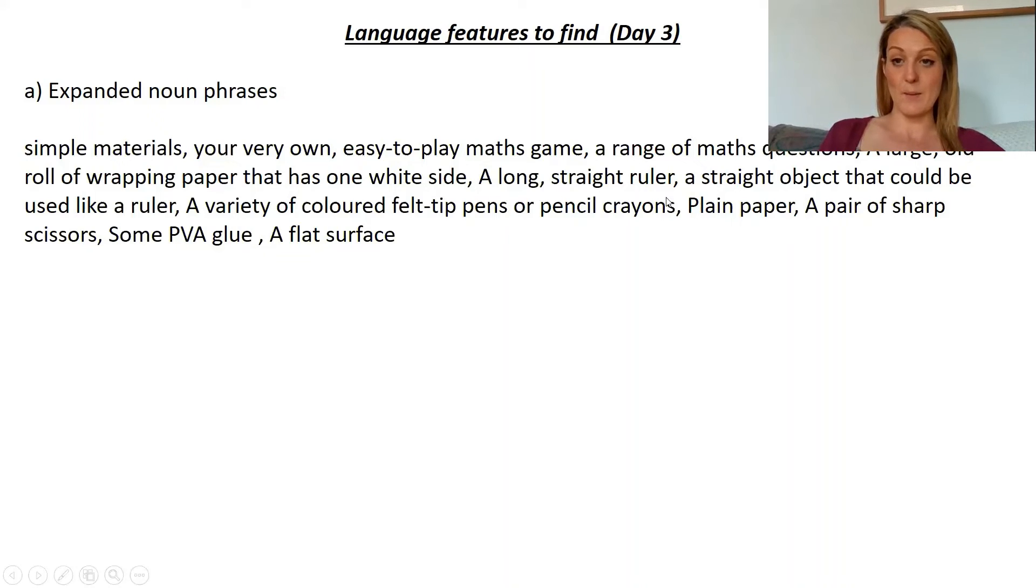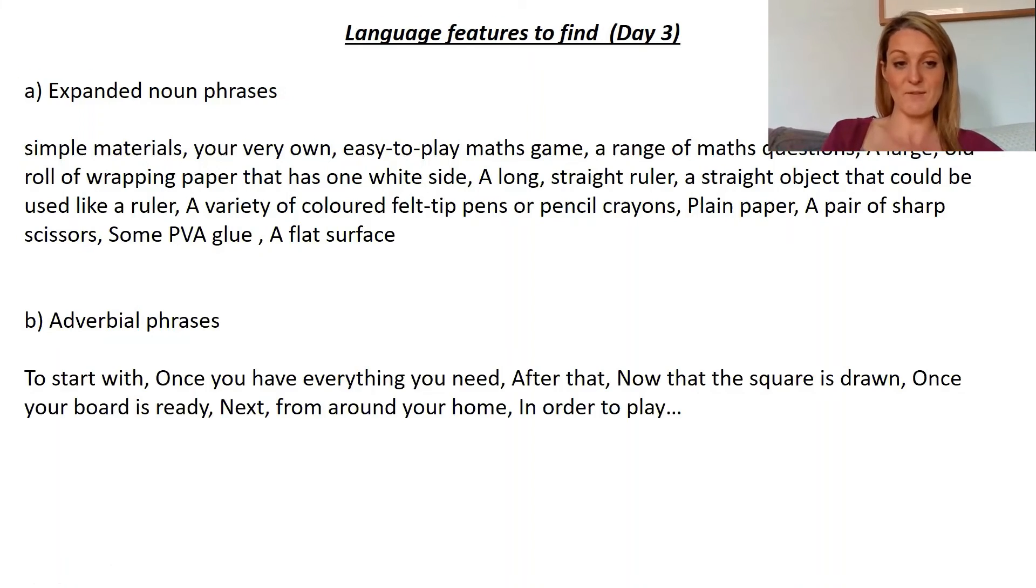Loads of expanded noun phrases used in that section. You can see with some of those you've got expansion before the noun and after as well. So if we look at this one here, a straight object that could be used like a ruler. So straight is your adjective before the noun object, and then expanded afterwards with that could be used like a ruler. So with those expanded noun phrases, as I said, you can expand before the noun and after too. Next up, adverbial phrases. So again, you might have found more than this, you might not have found all of these ones. But these are the ones that I found: to start with, once you have everything you need, after that, now that the square is drawn, once your board is ready, next, from around your home, and in order to play.